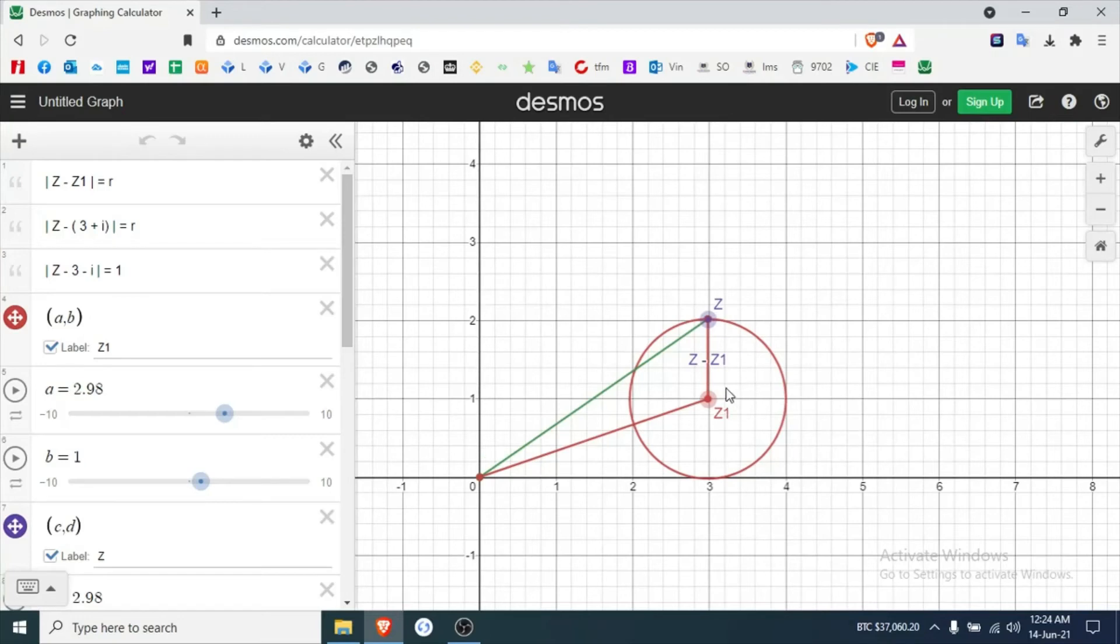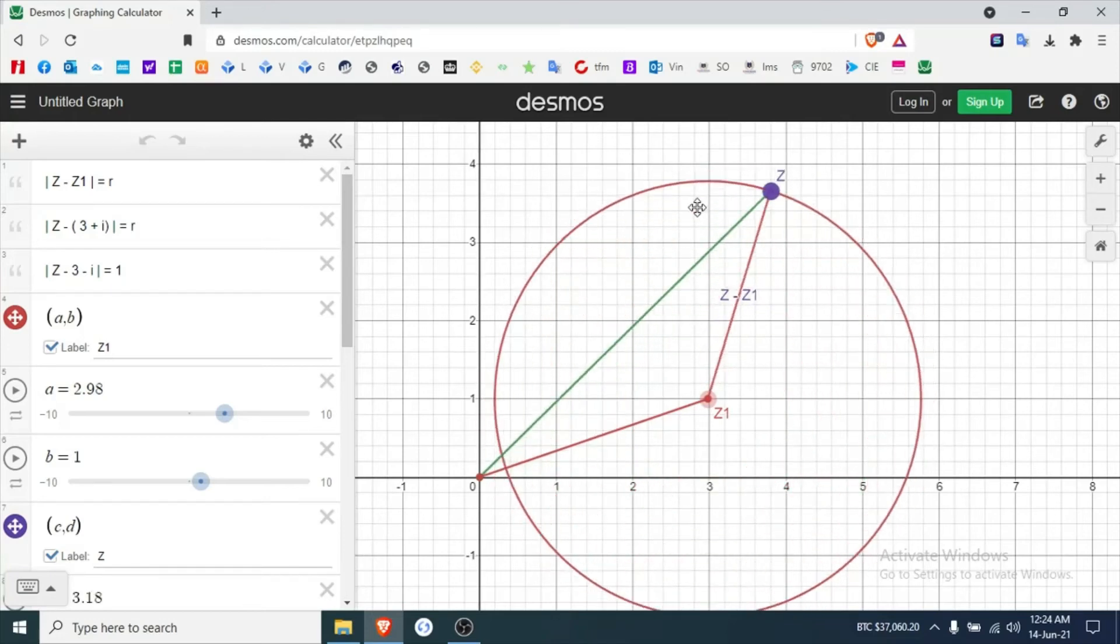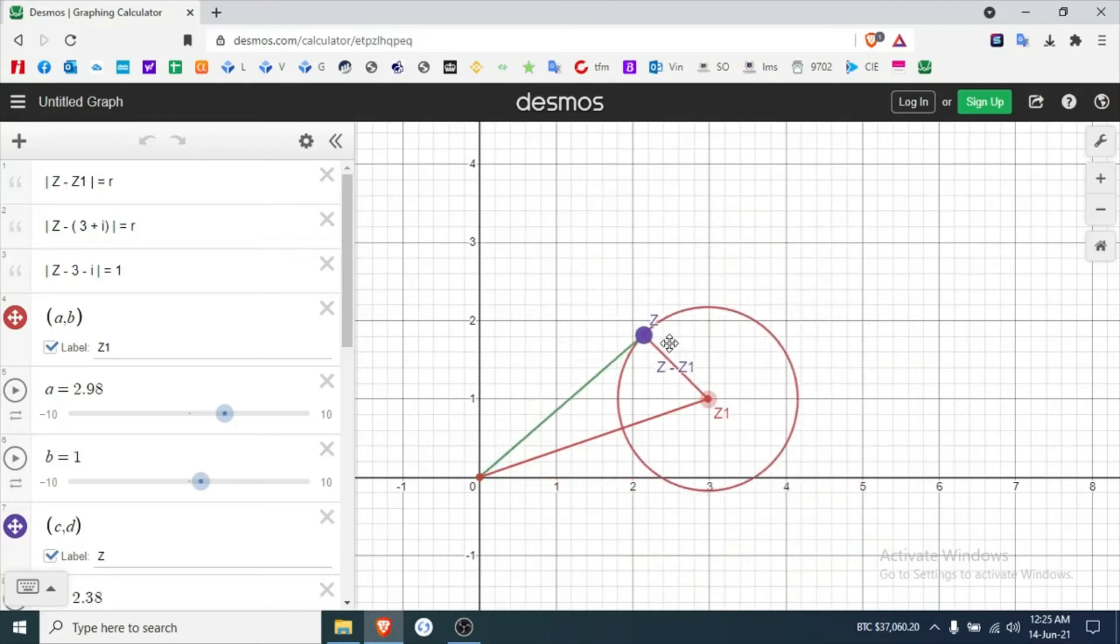Now what I did, I programmed all this in so I can move these two points around, z and z1. So if I change z1, I'm changing the radius but the center stays the same here.